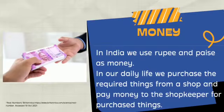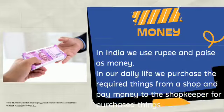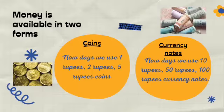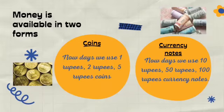So we give money to buy things. Money is available in two forms: coins and currency notes. All of you have seen currency notes and coins. We have learned about rupees and all of you have seen and used them.